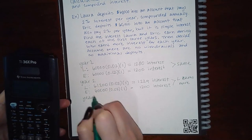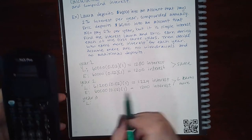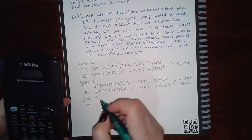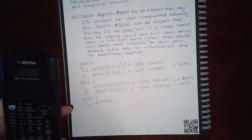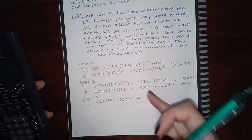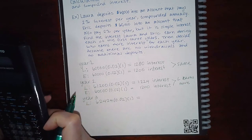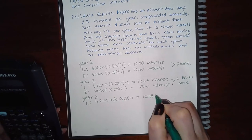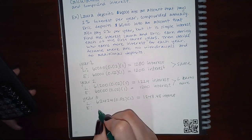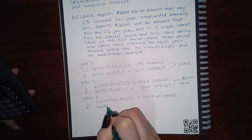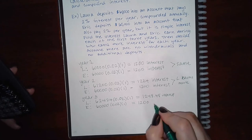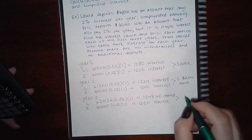For year three, Laura's account is compounded, so her balance from year two includes all previously earned interest. That balance gets multiplied by the rate for one more year, and we end up with twelve hundred forty-eight dollars and forty-eight cents in interest — again a little bit more than before. For Eric, it's simple interest calculated only on the initial deposit for another year, which means he earns another twelve hundred dollars in interest. Again, Laura earns more in year three.